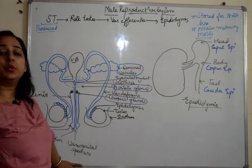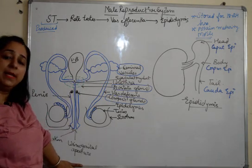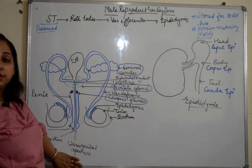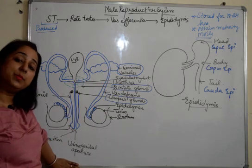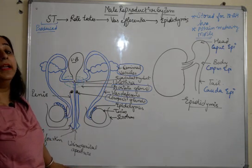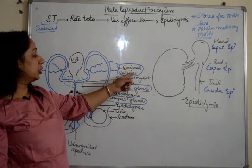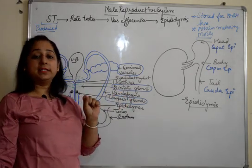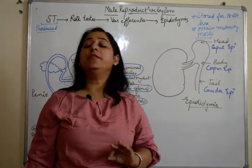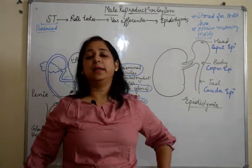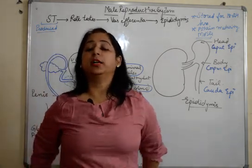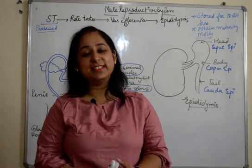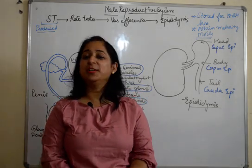So this is the male reproductive system — its parts and their functioning. In our next video we'll be discussing about the secretion of seminal vesicles, prostate gland, and Cowper's gland, and the main role they play in the male reproductive system. So keep watching, liking, sharing, and subscribing. Thank you.